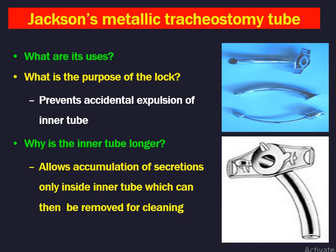Next, tracheostomy tubes. Different types are used but commonly used tubes are metallic and plastic. Metallic tubes can be Jackson's or Fuller's types. The Jackson's metallic tracheostomy tube has an outer tube, inner tube, and obturator. It is used after tracheostomy as the second tube — the first tube is always a cuffed tracheostomy tube because the patient might aspirate secretions. The Jackson's tube does not have a cuff. There is a lock here which prevents accidental expulsion of the inner tube — the inner tube is always kept locked so when the patient coughs the inner tube will not come out.